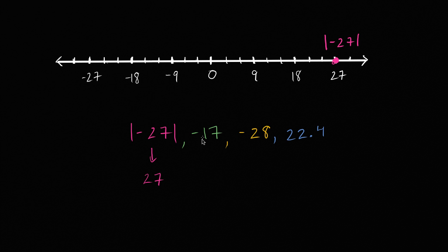All right, then we have negative 17. Let's see, each hash mark here is three. So this is negative nine, negative 12, negative 15. Negative 17 is going to be right around there. That is negative 17.